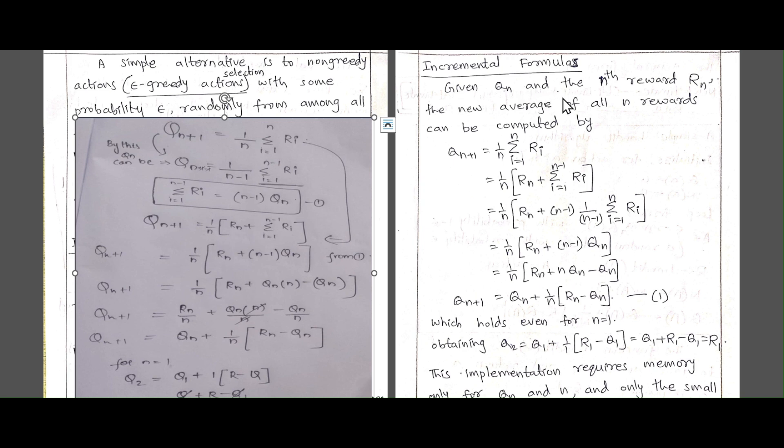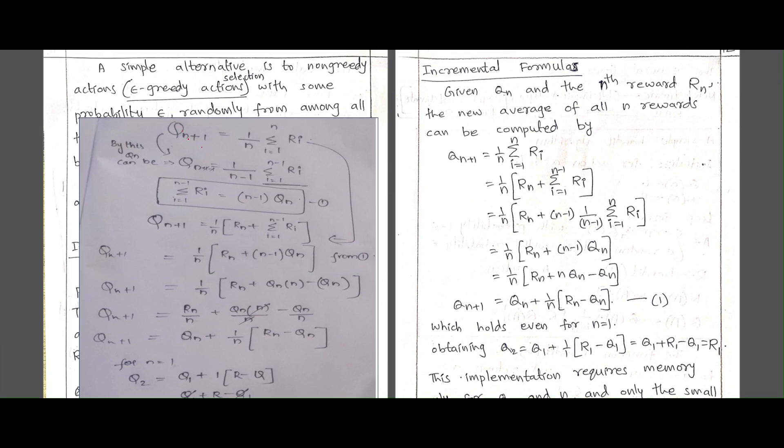When discussing the incremental formula: given Q_n and the new reward r_n, the new average of all n rewards can be computed as Q_{n+1} = (1/n) * sum of r_i from i=1 to n. From this we can derive Q_n by substituting n-1, where n-1 and the plus-one cancel. We get that the summation of r from i=1 to n-1 equals (n-1) * Q_n — we are simply multiplying Q_n by (n-1). Let us call this equation 1.